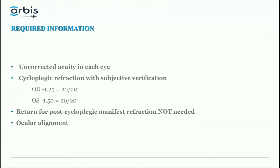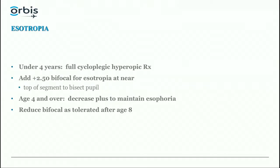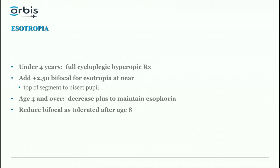We also need to know ocular alignment, since whether eyes are straight or crossed makes a difference in the prescription. In esotropia under age four, give the full cycloplegic hyperopic prescription and add a plus 2.50 bifocal for residual esotropia at near. This should initially be a flat-top bifocal with the top bisecting the pupil. Older children may wear a progressive multifocal lens if alignment is well controlled.